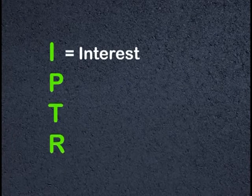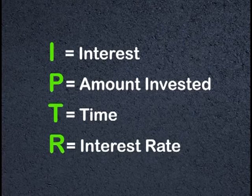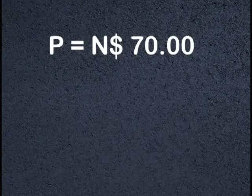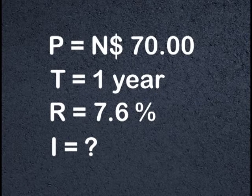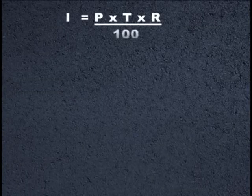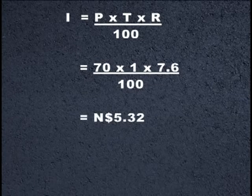That sounds interesting. We use different symbols when we calculate interest rates: I equals interest, P equals amount of money invested, T equals time, and R equals interest rate. To calculate simple interest, the formula is I = P × T × R ÷ 100. Let's say we save $70 Namibian dollars for a year and receive interest of 7.6%. The calculation is $70 × 1 × 7.6 ÷ 100, which gives you $5.32 Namibian dollars interest for the year.